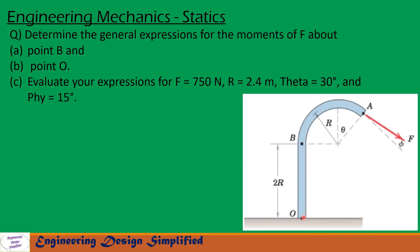In this problem, given is a bar OBA as shown in the figure. The shape of the bar has radius r, and the distance from B to O is 2r. A force F is applied at an angle phi from this line, where this line is perpendicular to another line, and the angle between the perpendicular line and that line is theta. We need to derive an expression for the moment about B due to F and the moment about O due to F, and evaluate those equations for the given values.